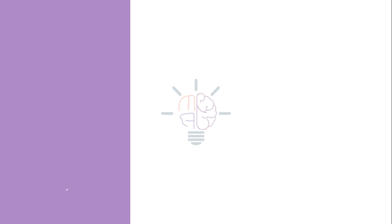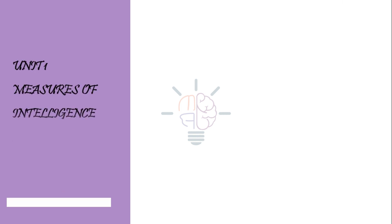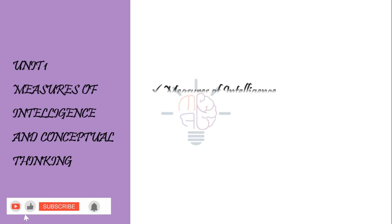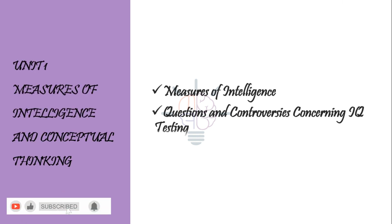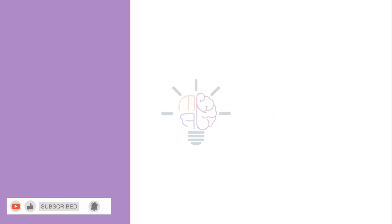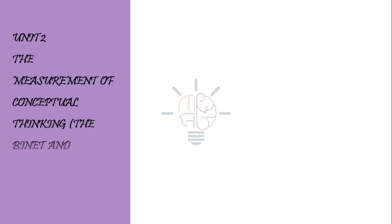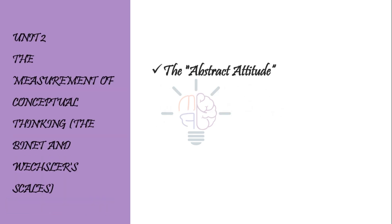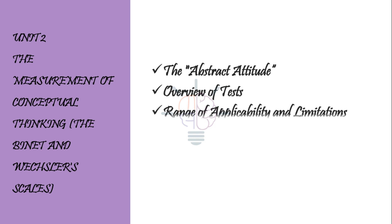From Block 3 Unit 1: measures of intelligence and questions and controversies concerning IQ testing. From Unit 2: the abstract attitude, overview of tests, range of applicability, and limitations.